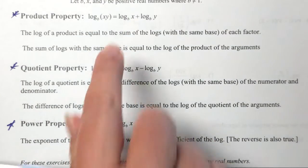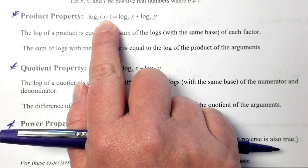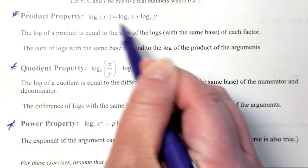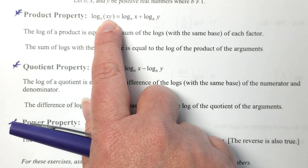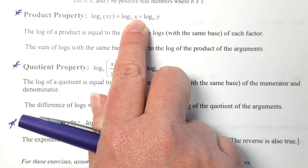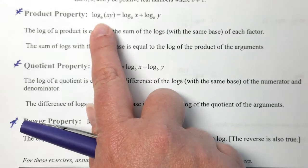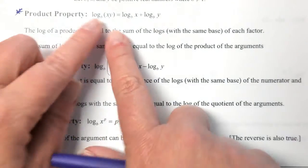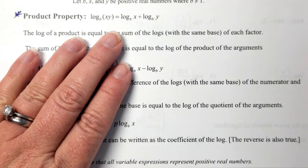The product property says that if you have two things being multiplied together in the argument position — here X and Y are being multiplied — you can rewrite that as two separate logs: log base B of X plus log base B of Y. If you have a single log with a product in the argument, you can write it as two separate logs being added. By the same token, two logs being added can be rewritten as a single log where you multiply those arguments together. We use that in both directions.